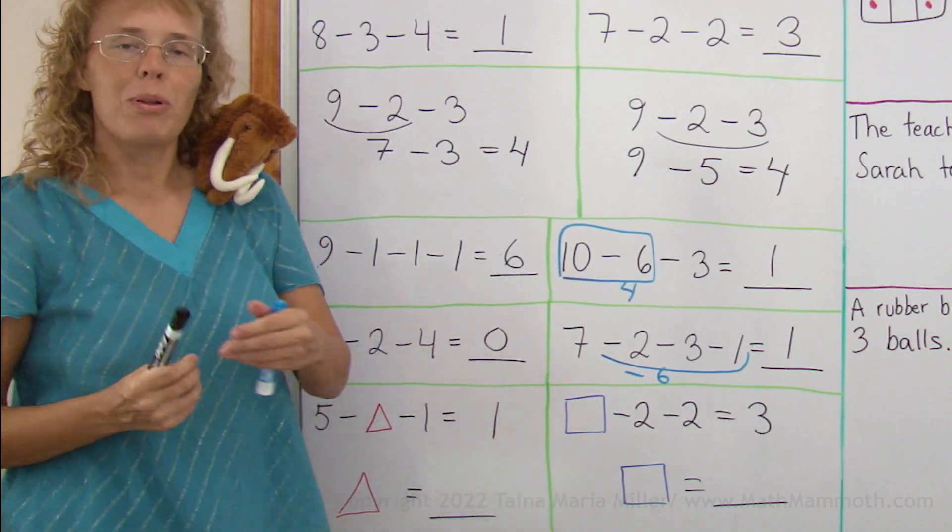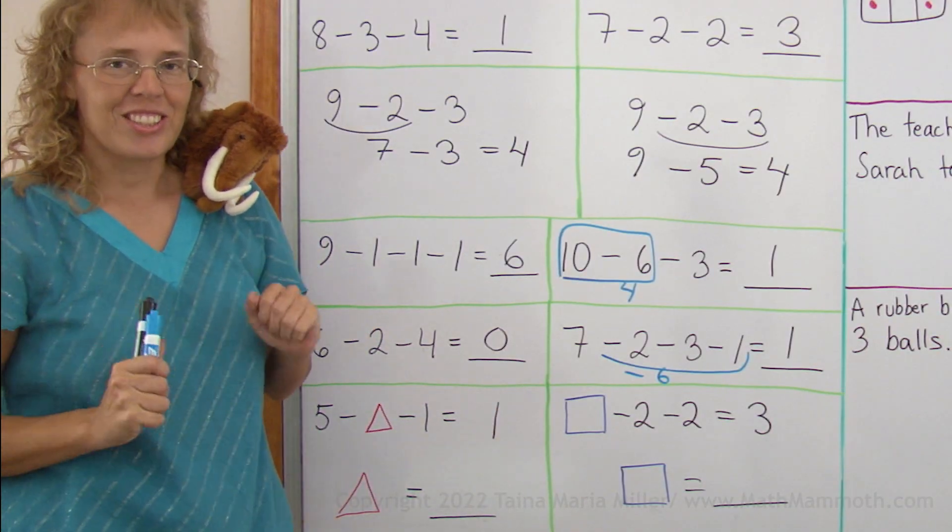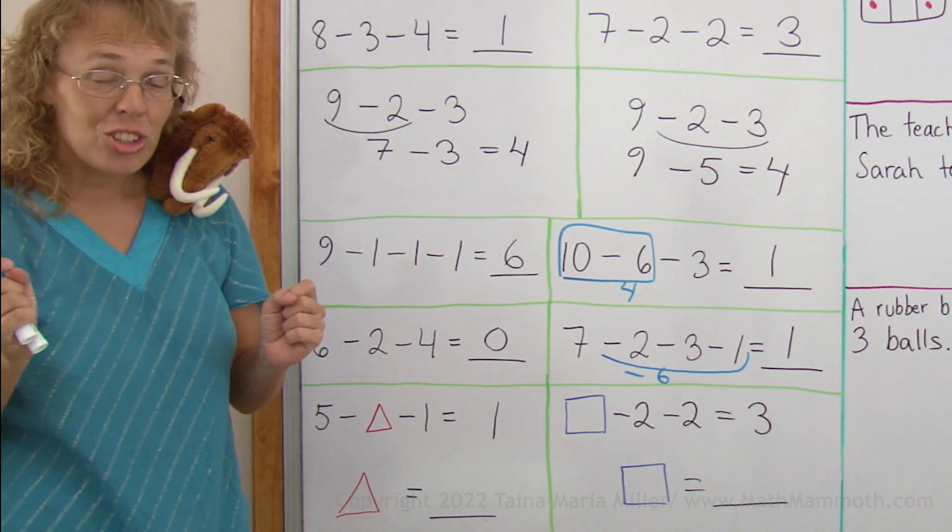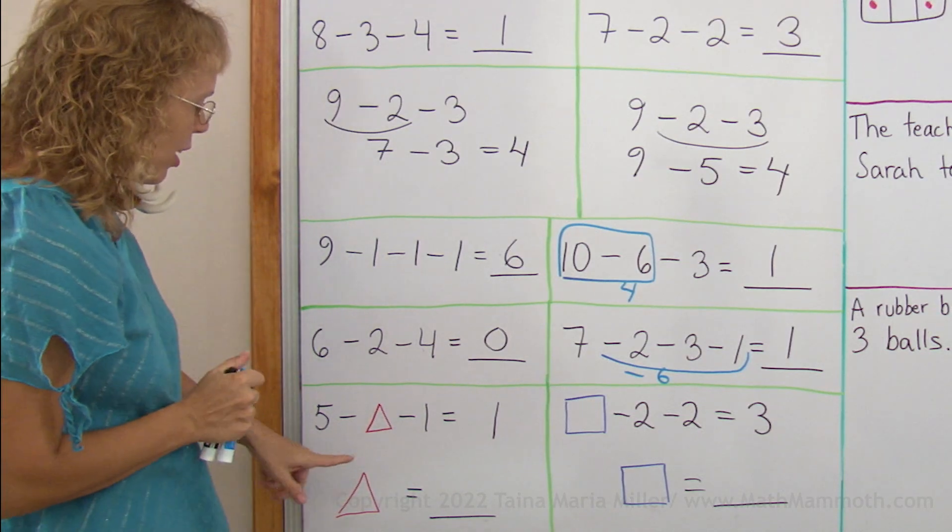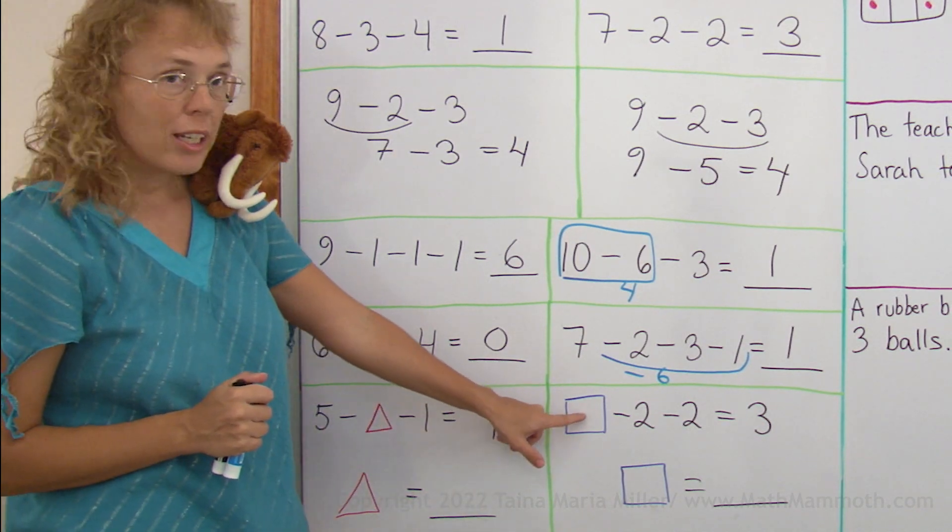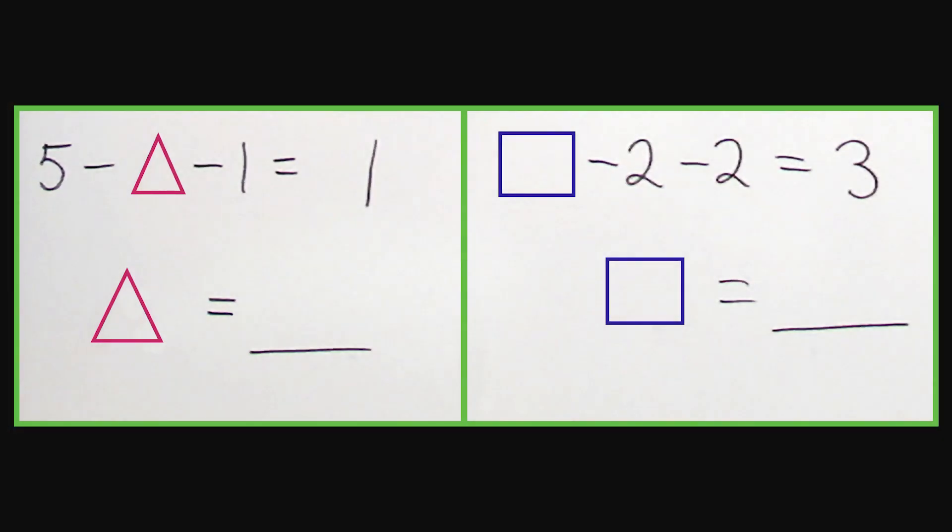Now, these two problems are challenges. And Matthew is giving you those challenges to solve. They are equations. We need to find what number goes here in place of the triangle, and what number goes here. Think about them just for a little bit. Don't worry if you can't get them. Try.